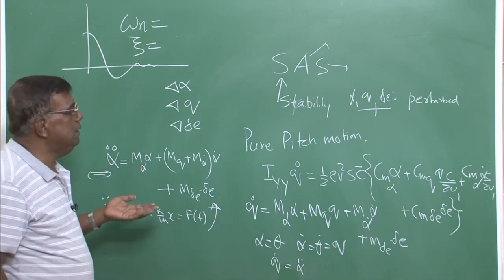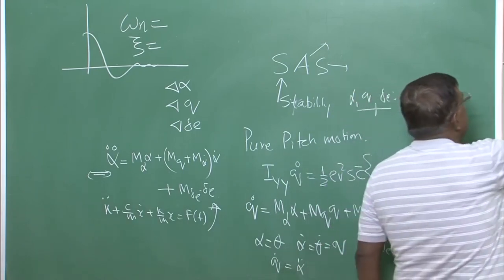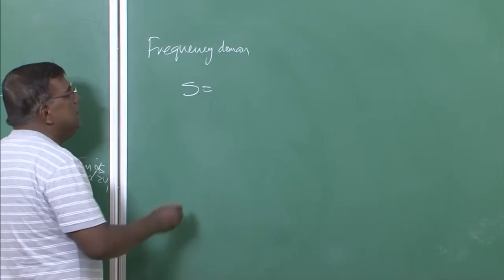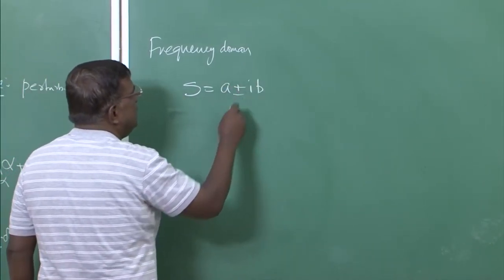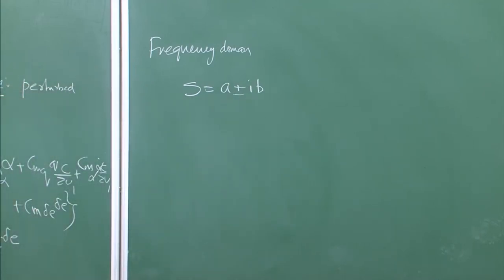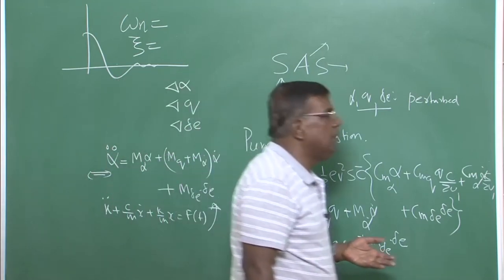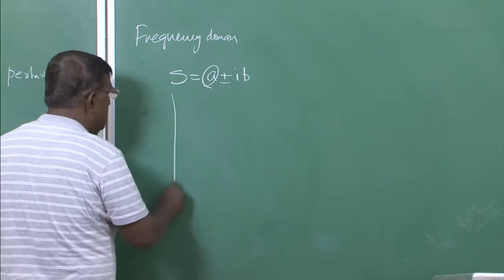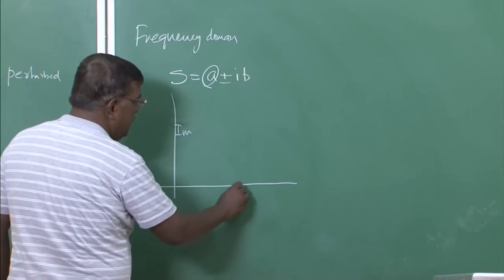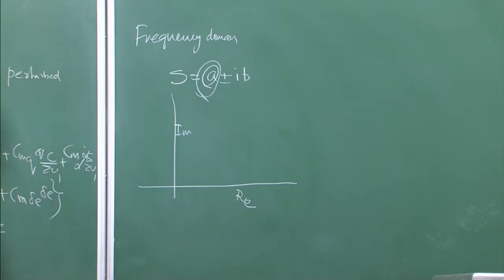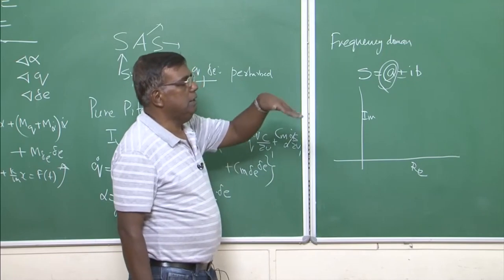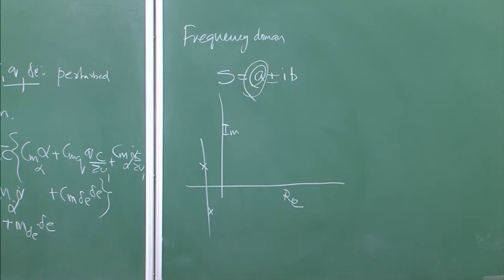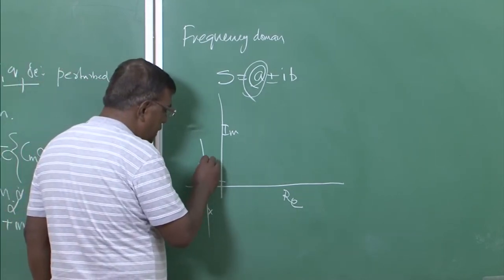What we have done is we worked in the frequency domain using the Laplace transform. We found out the roots s, and for a particular case it has real and complex parts as conjugates. Immediately I know it will oscillate in re-motion; whether it diverges or converges depends on the value of the real part 'a'. If 'a' is negative, it will converge. Pictorially, if this is the imaginary-real plane, I expect the root pair to be on the left-hand side of the plane so that the real part is negative and oscillations are damped out.